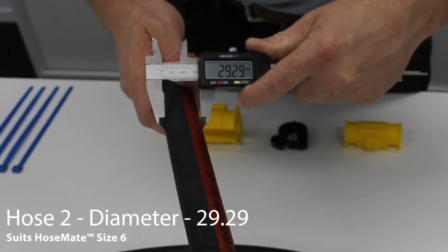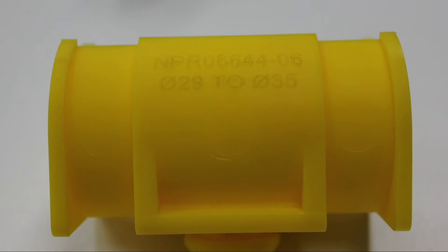Hose wall thickness can vary from application to application. Select the correct HoseMate clamp size to suit your hose outside diameter measurement by referring to the size recommended on each HoseMate clamp.